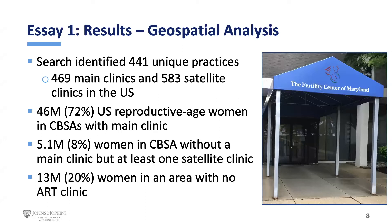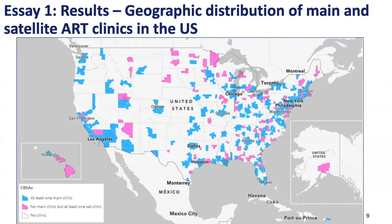Rolling those up into numbers, the geospatial analysis found 441 unique practices, 469 main clinics, and 583 satellite clinics. The question then becomes how many women have access to care — how many women live in a CBSA with a main or satellite clinic? Essentially, 72% have access to a main clinic and 8% have access to only a satellite clinic. Then 13 million women — 20% of the population — have no access to ART. These are women not necessarily in rural areas but living in a town or metropolitan or micropolitan area. So a good portion of the population does not have geographic access based on the CBSA method.